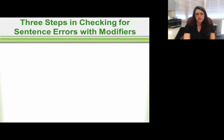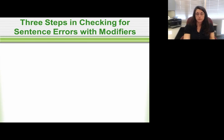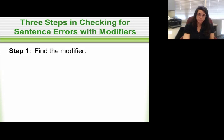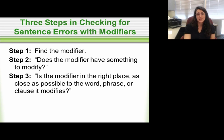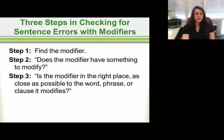We're going to look at three steps to help you check for sentence errors with modifiers. First, find your modifier — it can be a word, a phrase, or a piece of a sentence. Then ask yourself: does it have anything to modify? If it does, decide whether the modifier is in the right place — as close as possible to the word, phrase, or clause it's modifying. If it isn't, fix it.